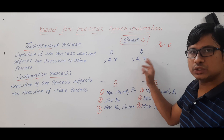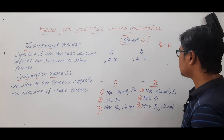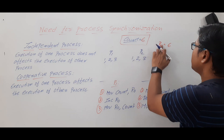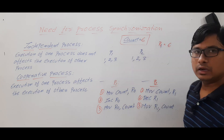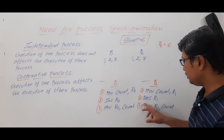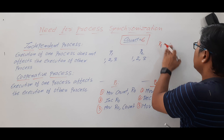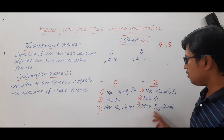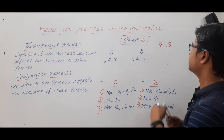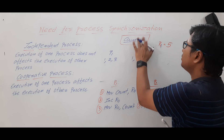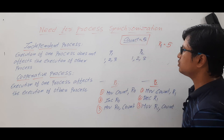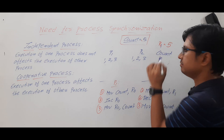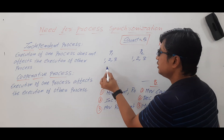Then executing P2: instruction 1 moves count (now 6) into R1, so R1 = 6; instruction 2 decrements R1, so R1 = 5; instruction 3 moves R1 back to count, so count = 5. Executing P1 then P2 serially gives the correct final count value of 5.